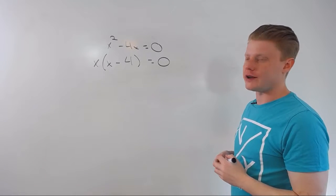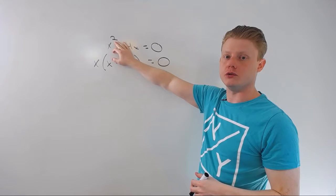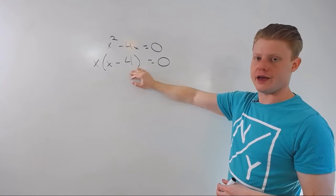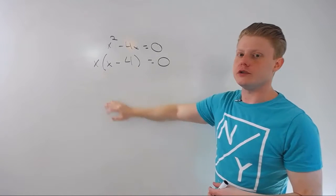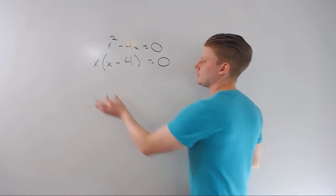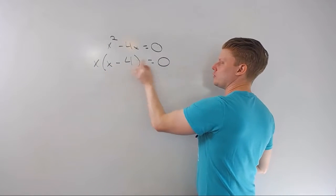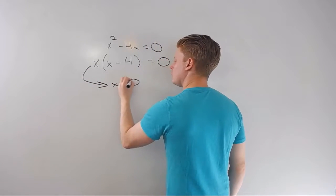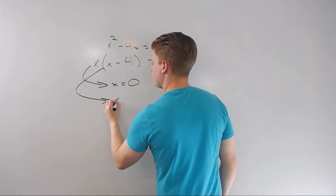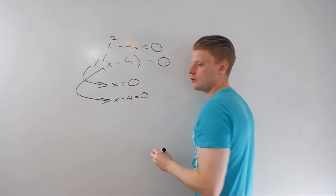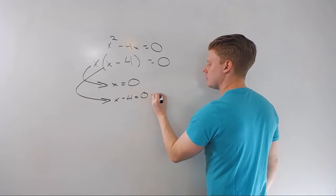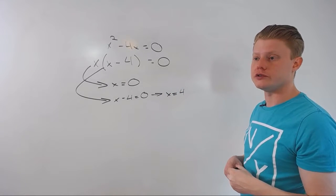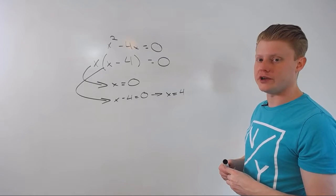When I factor a quadratic — an equation with the highest power of 2 — I always want the equation set equal to 0 before I start. That lets me draw a conclusion: x times (x minus 4) equals 0, so either x equals 0, or x minus 4 equals 0, which gives x equals 4. Those are two solutions — quadratics will always have two solutions.